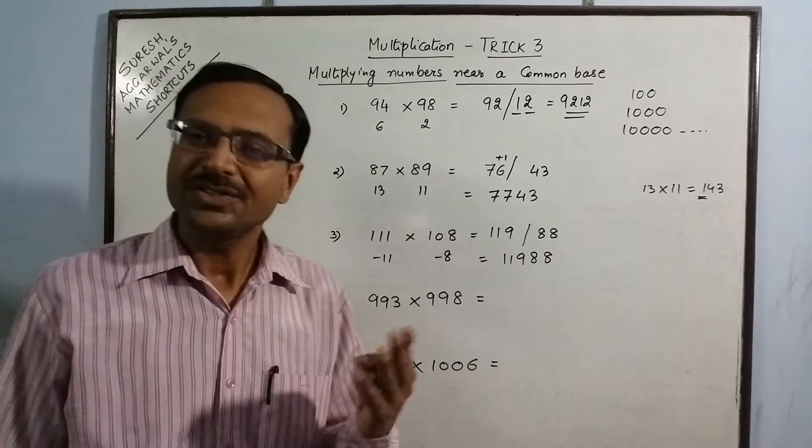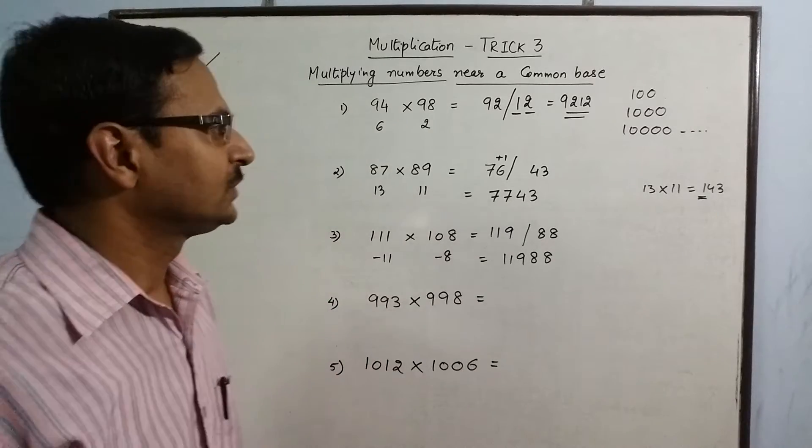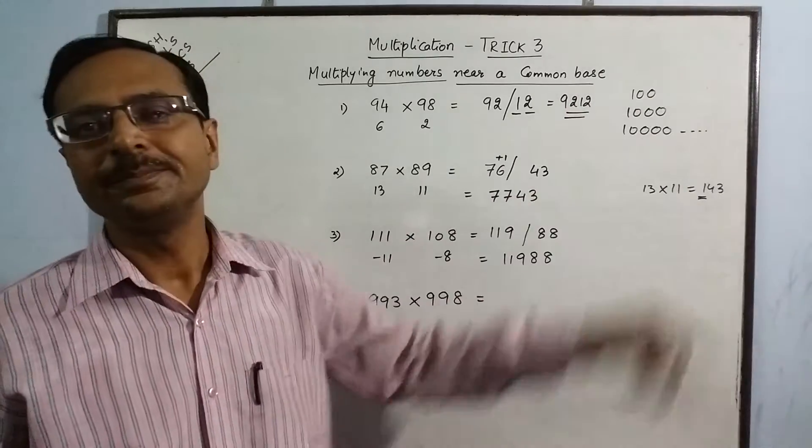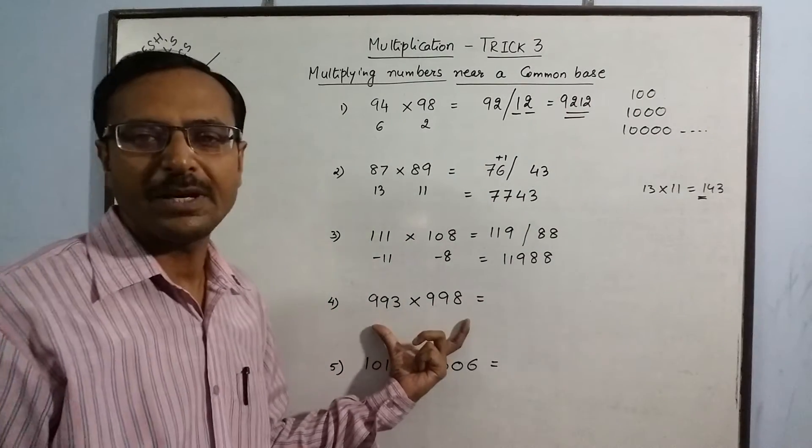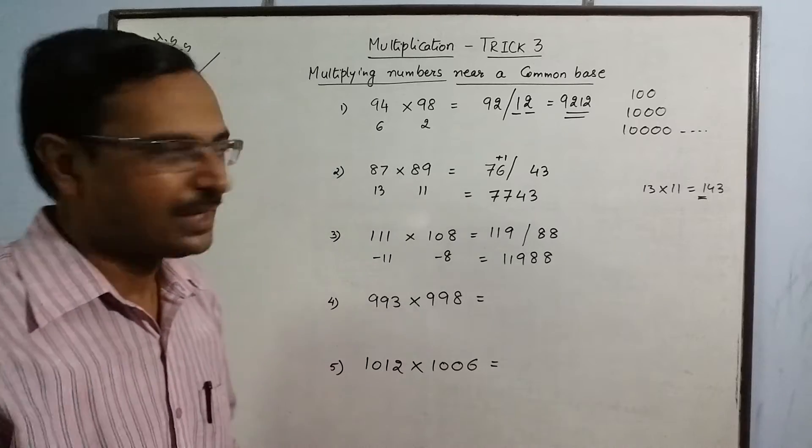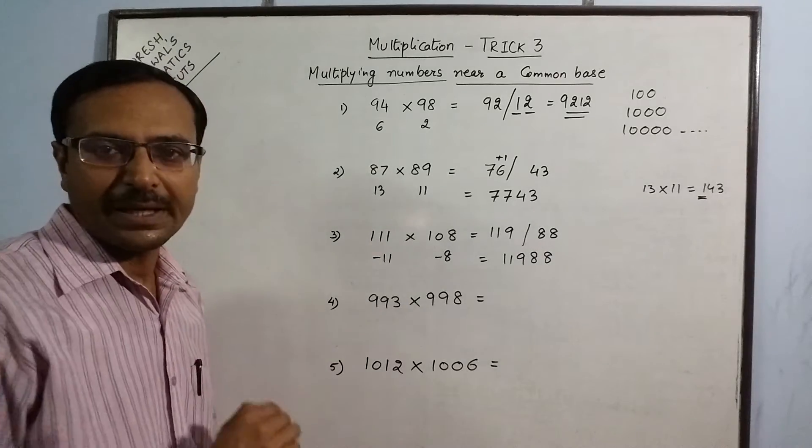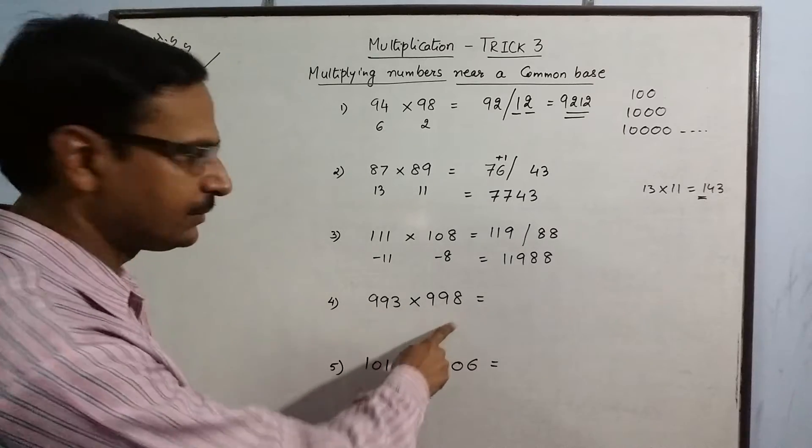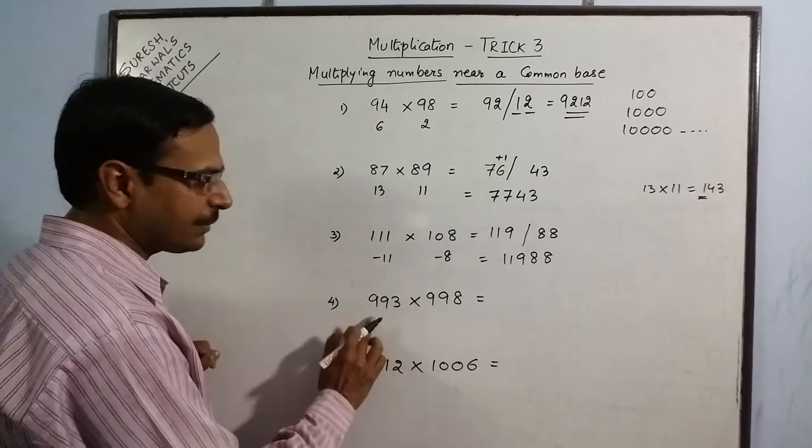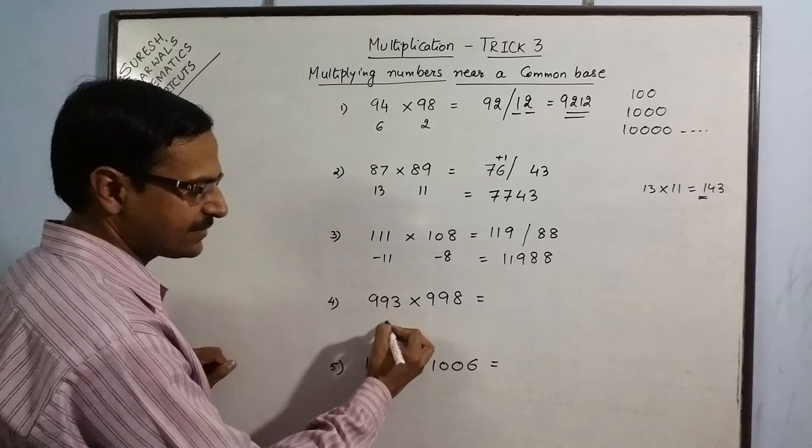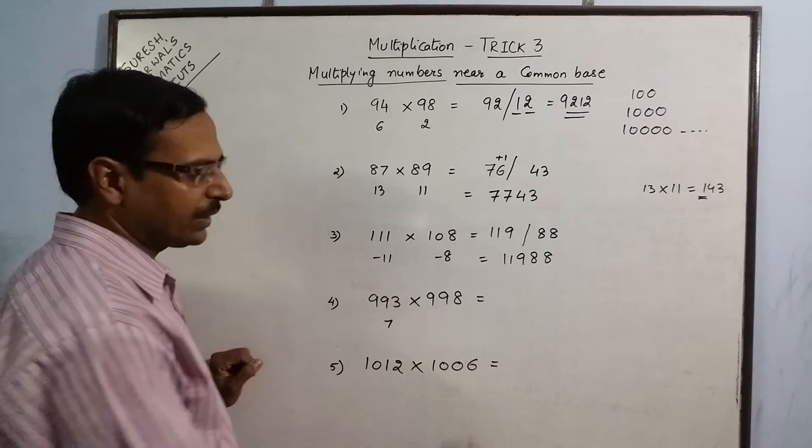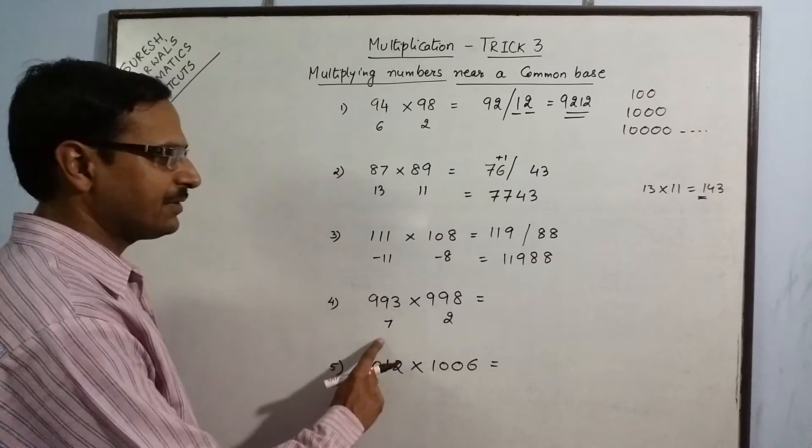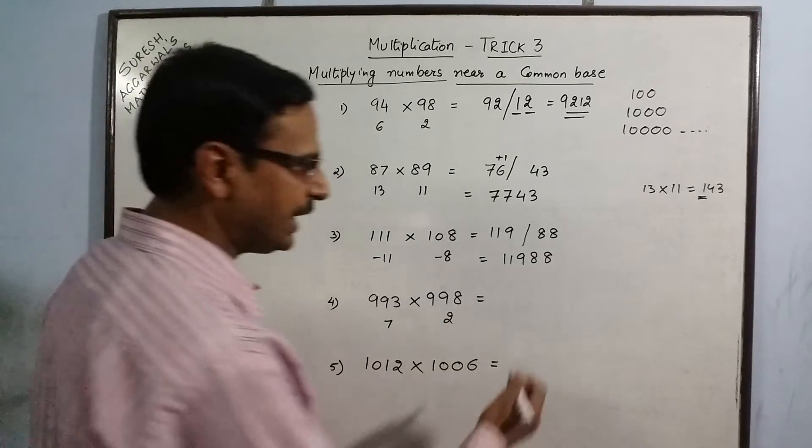Let us change the base quantity now. In these three examples, we had the base quantity as 100. Now, the base quantity becomes 1000. Applying the same method again, now we have to subtract these two numbers from 1000. 1000 minus 993 gives us 7. 1000 minus 998 gives us 2.